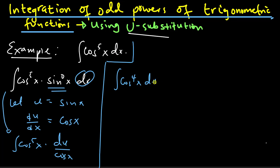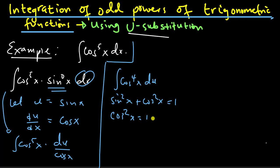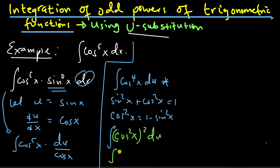Now this is not good because we have du and yet we are integrating a function of x. So I need to rewrite this in terms of u. We actually know that sin²x + cos²x = 1 — this is basically the Pythagorean theorem — so that means cos²x = 1 − sin²x. So I could write the integral as the integral of (cos²x)² du, which I'll write as (1 − sin²x)² du.